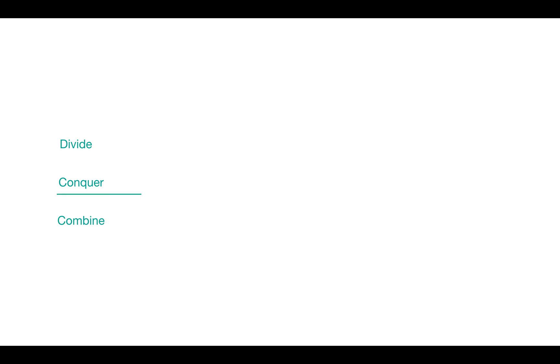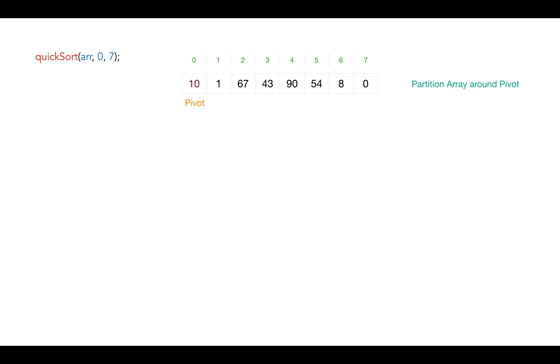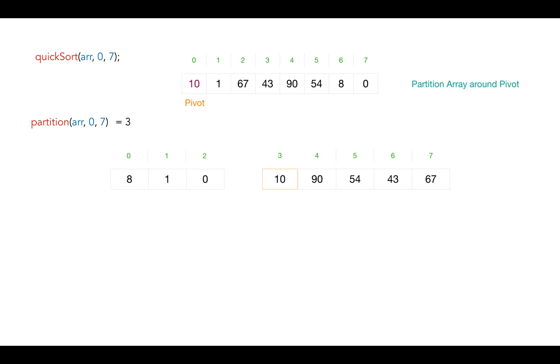Next, we conquer by recursively performing partitioning of the sub-arrays on either side of the pivot index. For example, 10 gets placed at index 3, so the partition function returns index 3. The next recursive calls will be for the sub-array from 0 to 2 and the sub-array from 4 to 7, and the same process repeats for each.